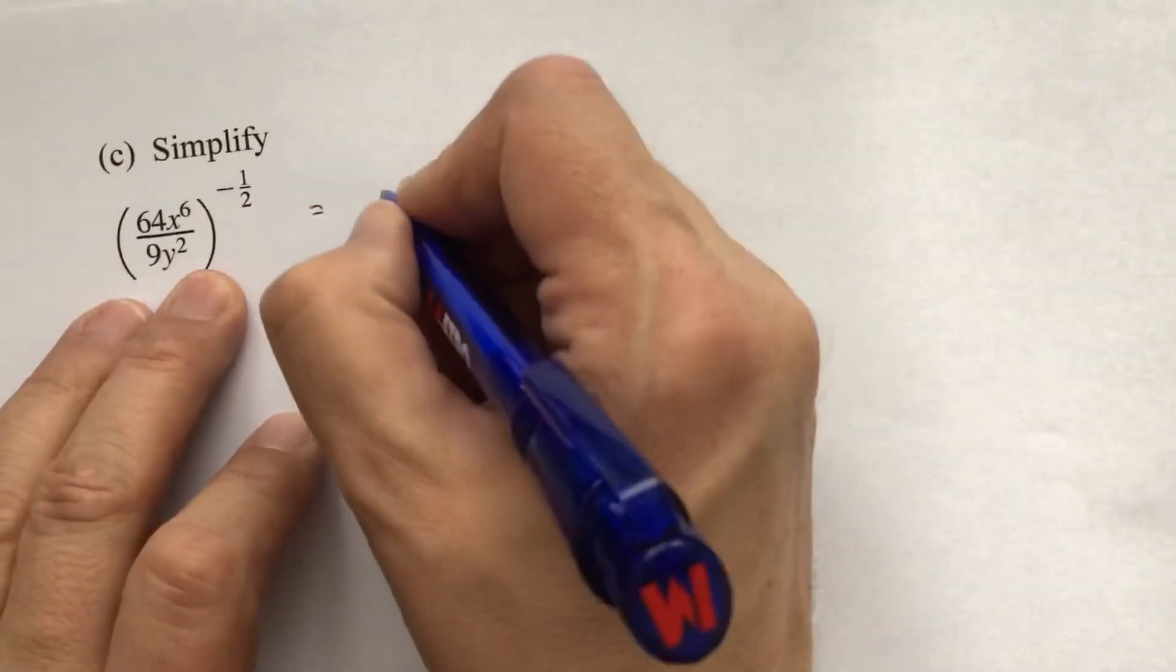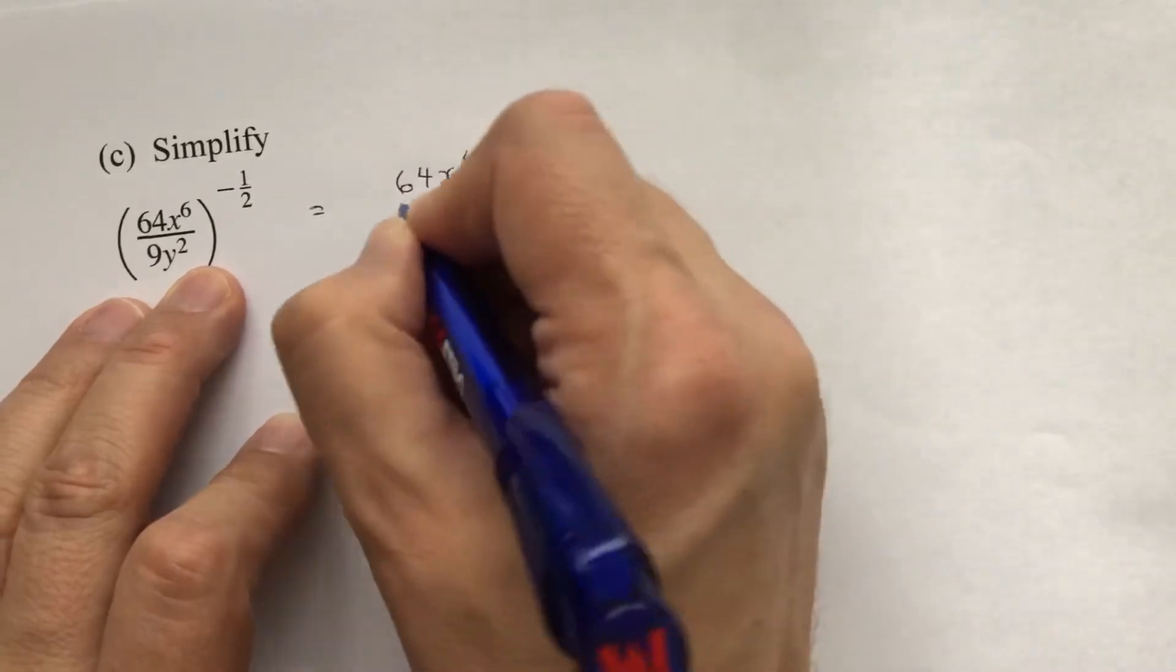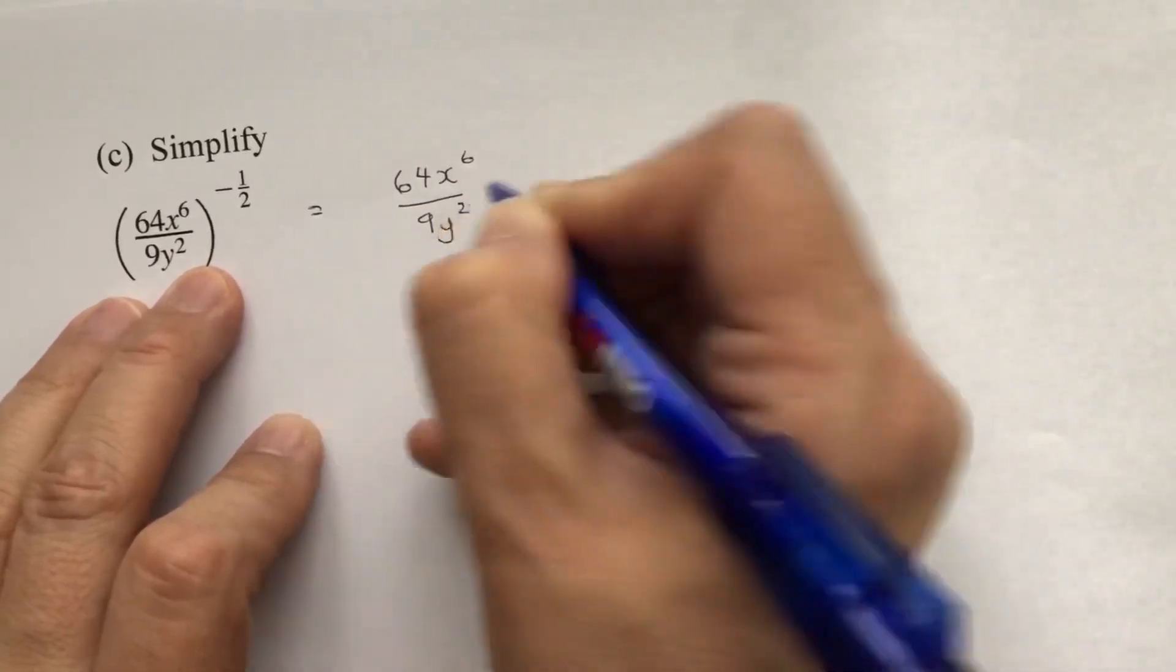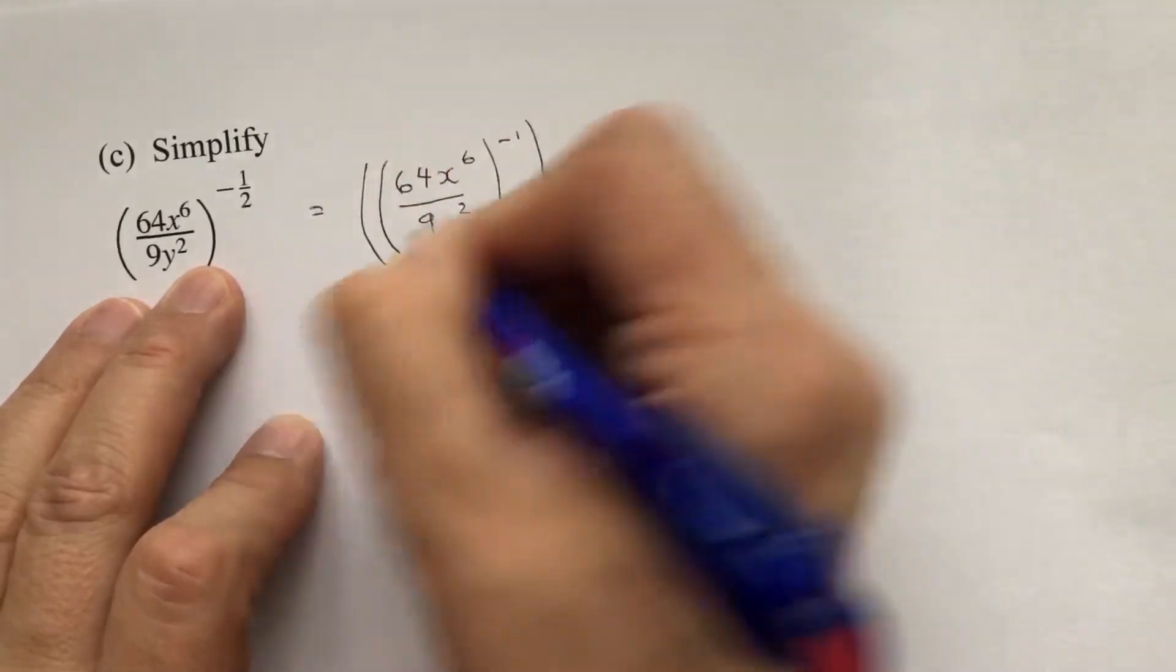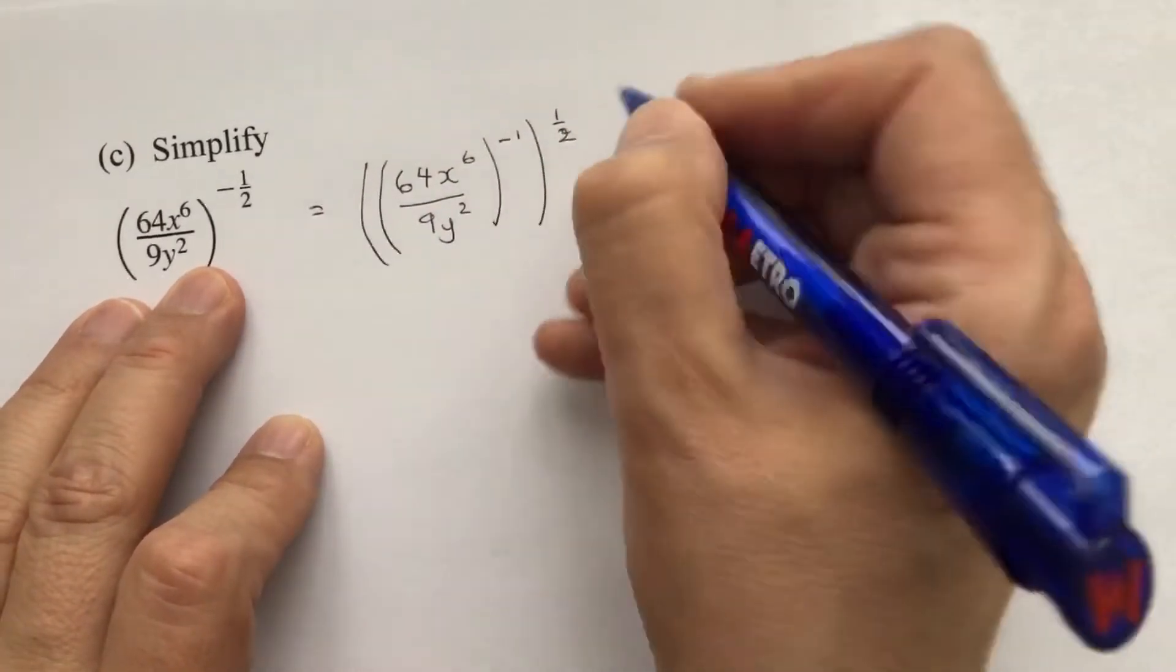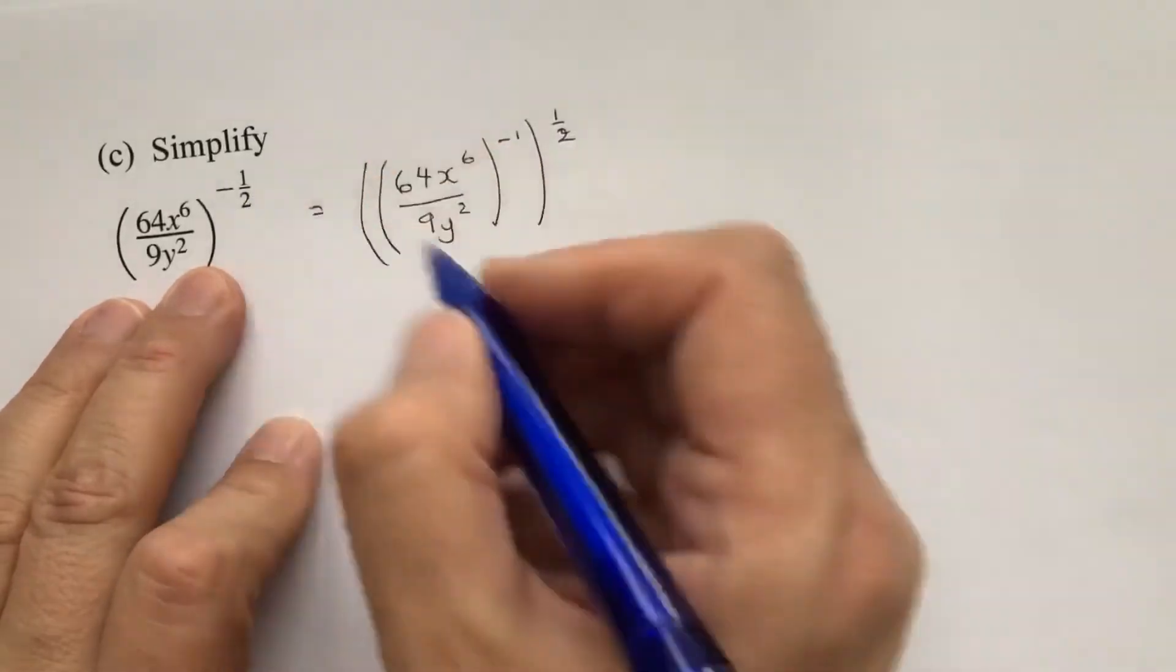So here we've got 64x to the power of 6 over 9y squared. Now it doesn't really matter which way you do these around, but I'm going to put the power of 1 first and to the power of a half second, because negative 1 times the half is negative half.